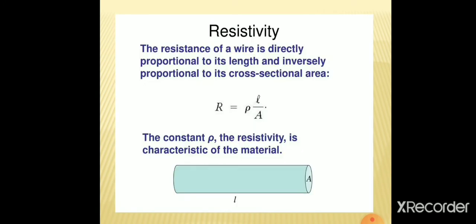Coming to the concept of resistivity. The resistance of a wire is always found to be directly proportional to the length of the wire and inversely proportional to the area of cross-section A.